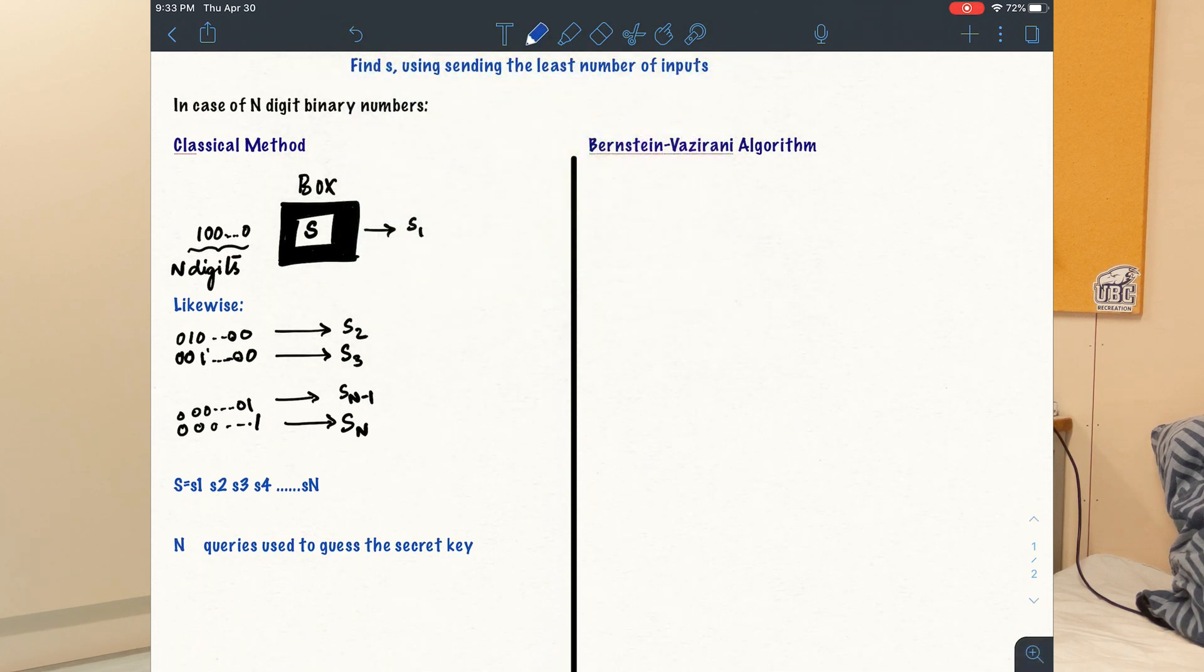In this way, we have to use n number of tries to find out if there is a 1 or a 0 at that position. For example, if there is a 1 at the first position, then the value of s1 would be 1.